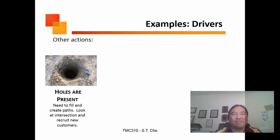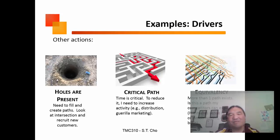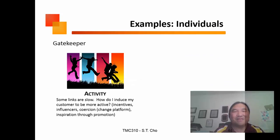Some examples of what drives these things are: do you have holes? What is a critical path? How long does it take to get from one point to another? Is there more than one path you can go through? That's referred to as equivalency. The problem is if you have equivalent networks and your competition found a backdoor into you.